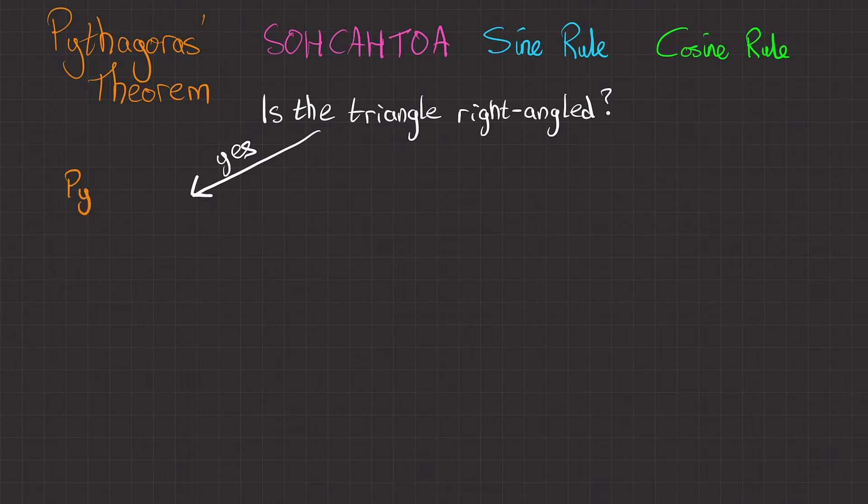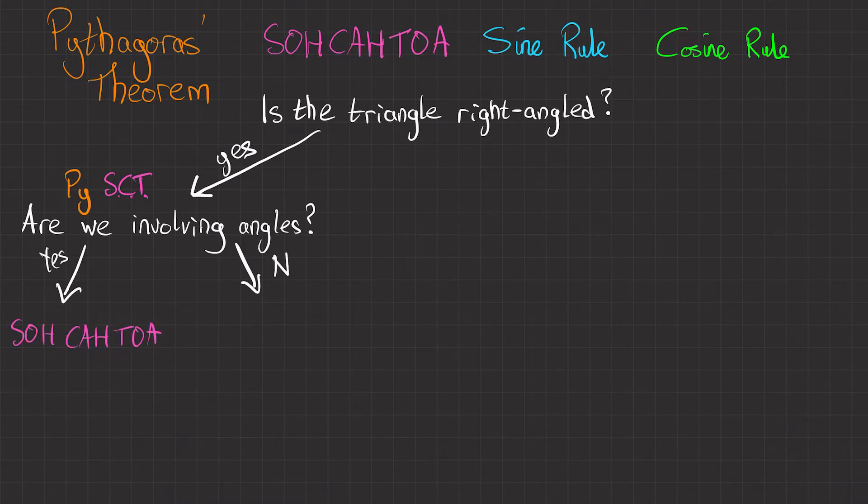If the answer is yes, then it's going to be either Pythagoras or SOHCAHTOA. The second question is: are we involving angles? If the answer is yes, we're going to use SOHCAHTOA. If the answer is no, we're going to use Pythagoras. So back to the top, if the angle is not a right angle triangle, then it's going to be either the sine rule or the cosine rule.